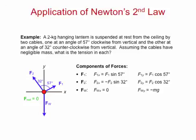For the F1 force, the x component is opposite the 57 degree angle, and the y component is adjacent. So F1 x is equal to the magnitude F1 times sine of 57 degrees, and F1 y is equal to F1 times cosine of 57 degrees, where F1 is the unknown magnitude of the F1 vector.